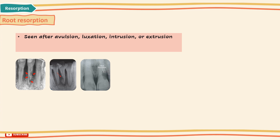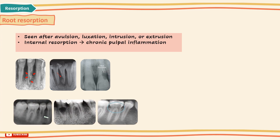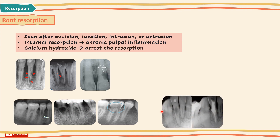Internal resorption is associated with chronic pulpal inflammation that results in resorption of the dentine from the pulpal surface. It is progressive; therefore the pulp needs to be carefully extirpated. A dressing of calcium hydroxide can then be placed to arrest the resorption, and once controlled, a gutta-percha filling may be placed.